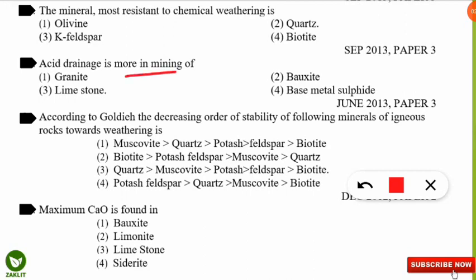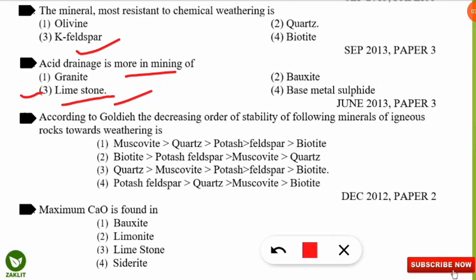The next question: acid drainage is more common in which type of mining — granite, bauxite, limestone, or base metal sulfide? The correct option is option 3 — in limestone mining, acid drainage is seen in greater quantity. Next, from December 2012 NET: the decreasing order of stability of igneous rock minerals toward weathering (Goldich classification) is quartz → muscovite → potash feldspar → biotite. The correct option is option 3.